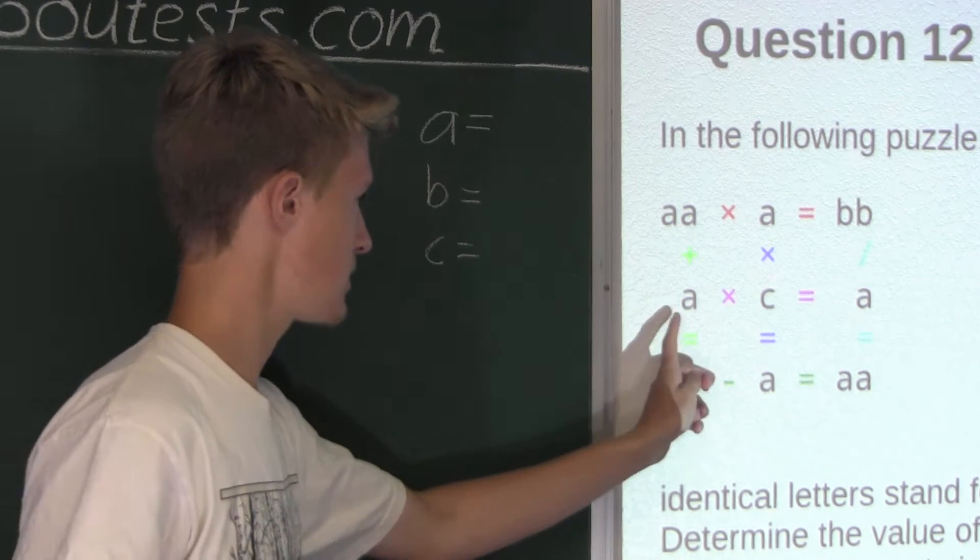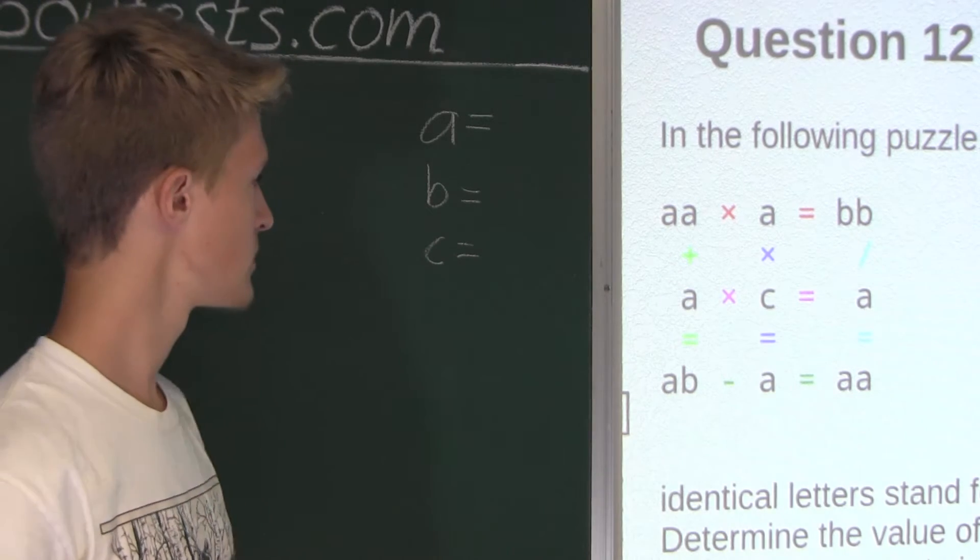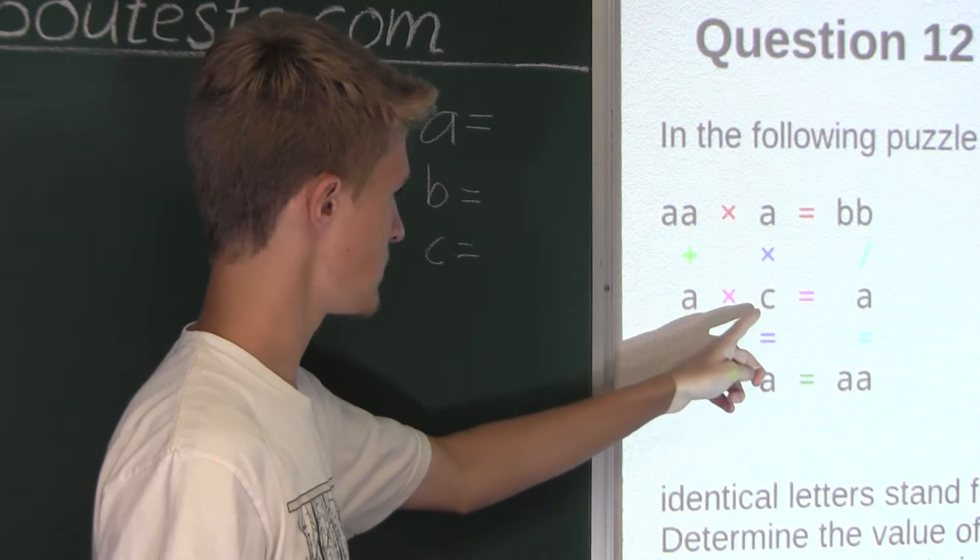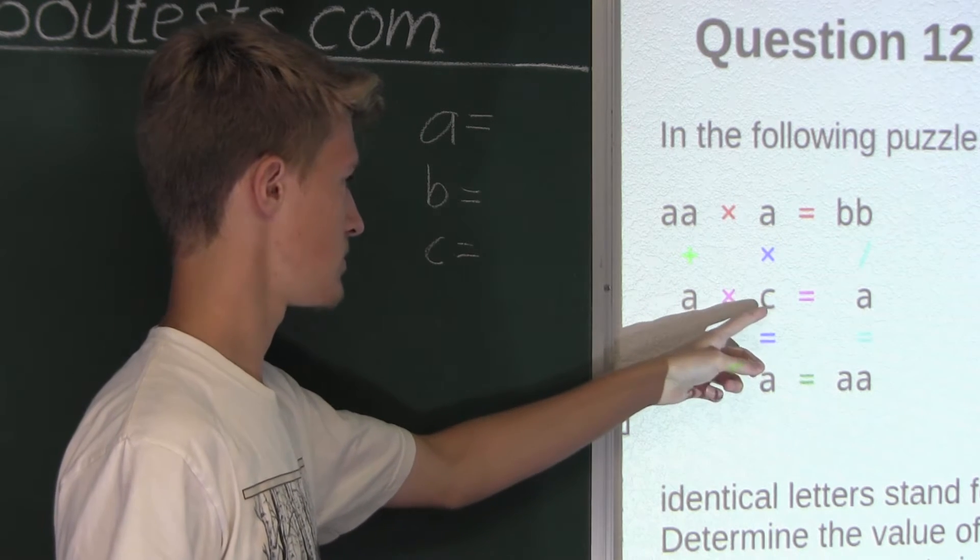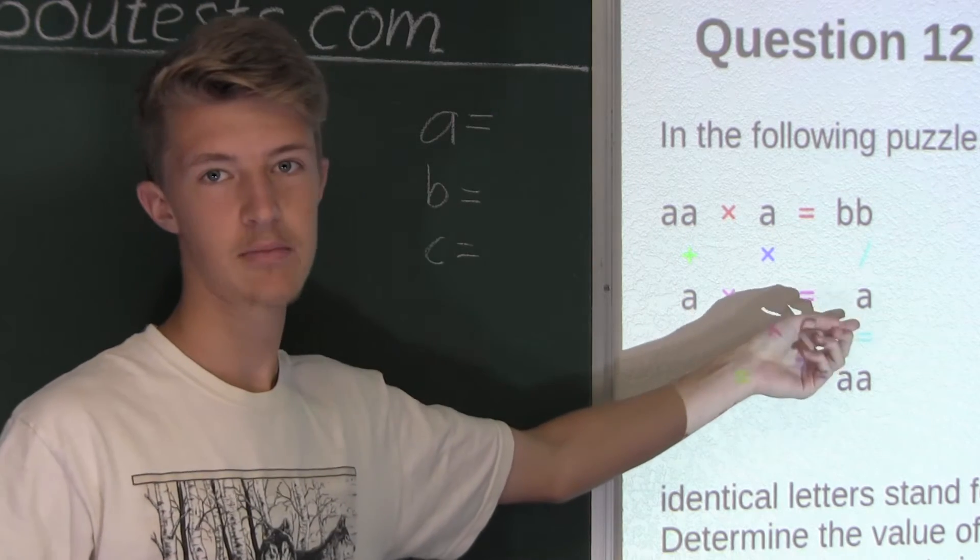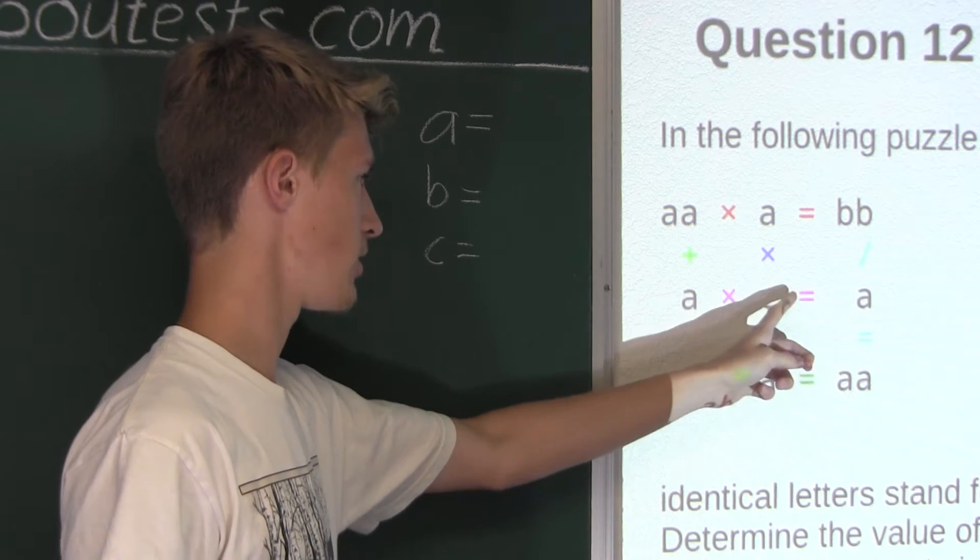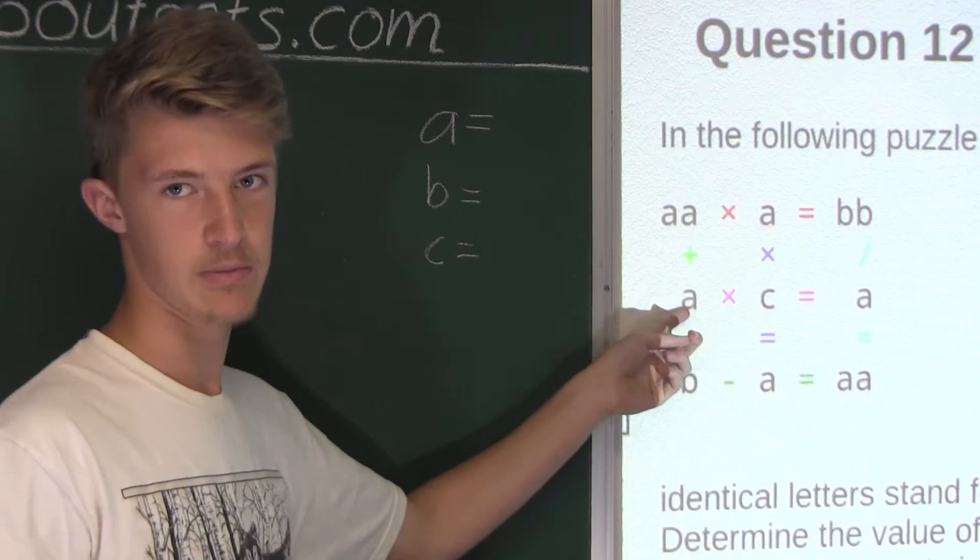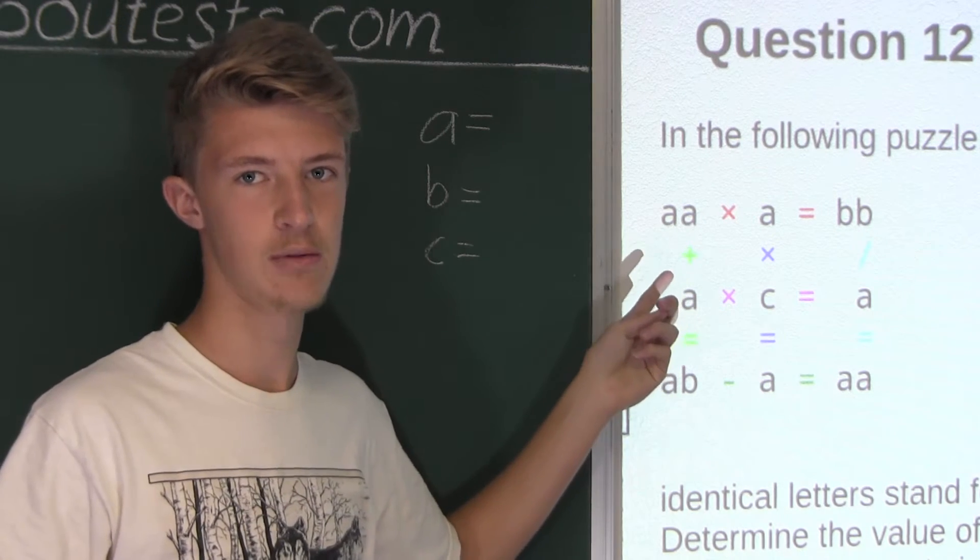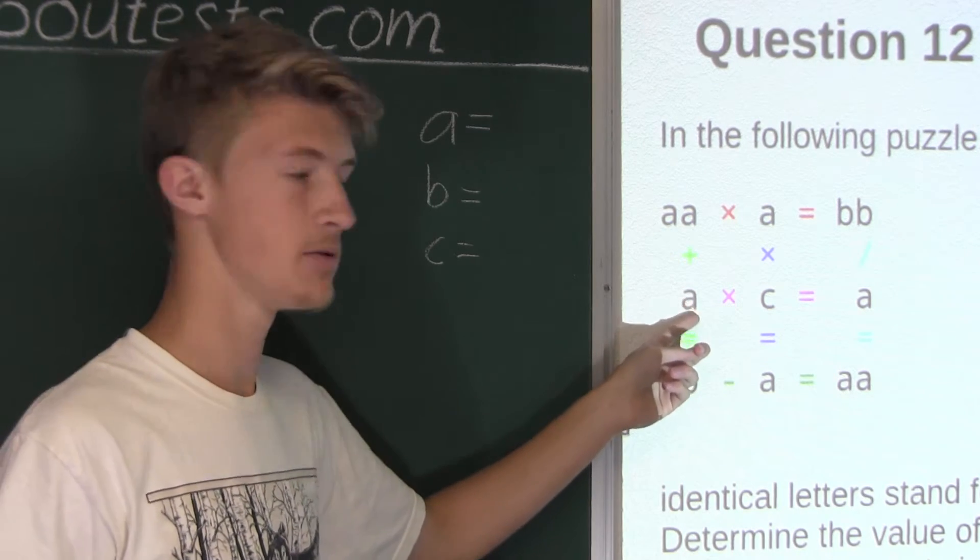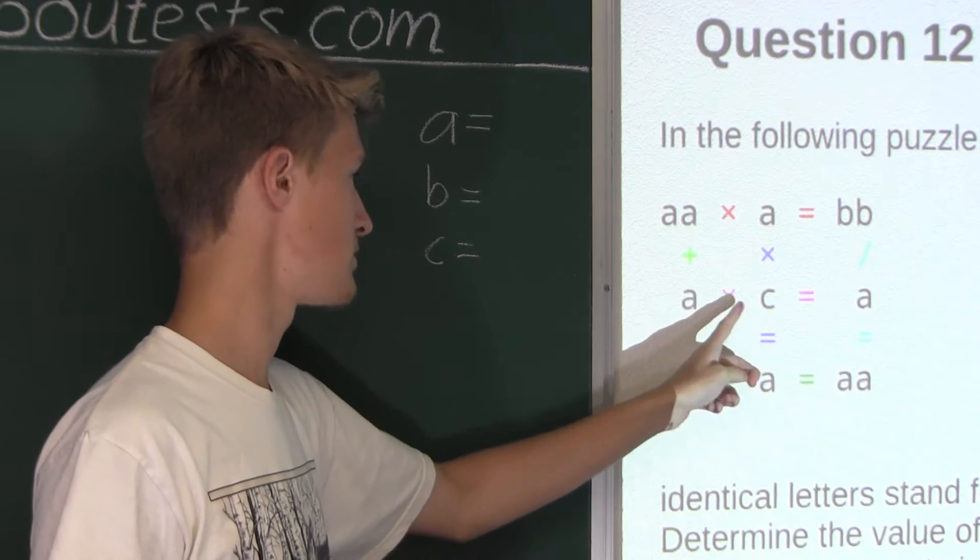Alright, now let's look at this middle equation. There are only one-digit numbers because we have A, C, and A. Now, we have A times C is equal to A. Now, we know that any number times one is equal to the same number. But also, if we have zero times any number, it would also equal zero. So now let's check if A could be zero. Well, up here we have AA, so that would be zero, zero. But zero is not a two-digit number, so therefore, in this case, A cannot be zero. So that means that C must be equal to one. So we have A times one is equal to A.